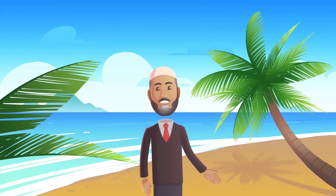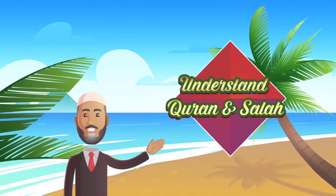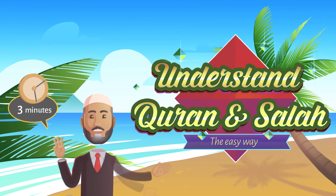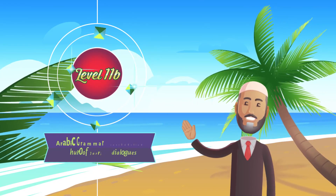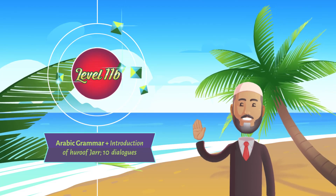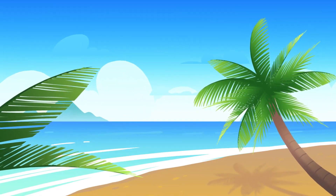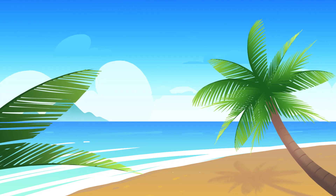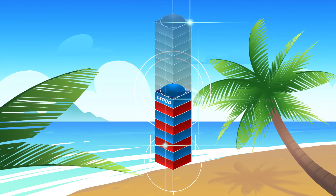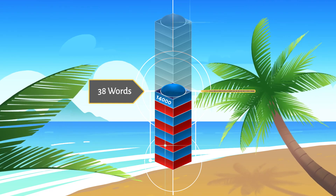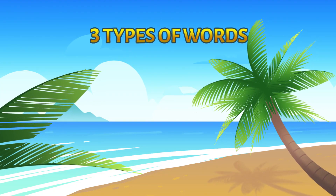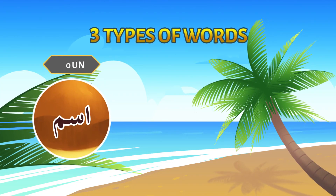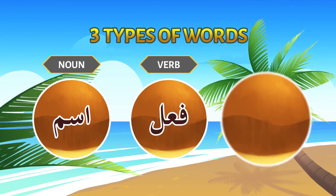Bismillah, alhamdulillah, wassalatu wassalamu ala rasoolillah. Understand Quran and Salah the easy way — three minute series, lesson 11b, in which we will study Arabic grammar and also take 10 dialogues. From the first lesson till the end of this one, we have covered 38 words which occur almost 14,000 times in the Quran. A word in Arabic can be one of three: ism (noun), fi'il (verb), or harf (particle).